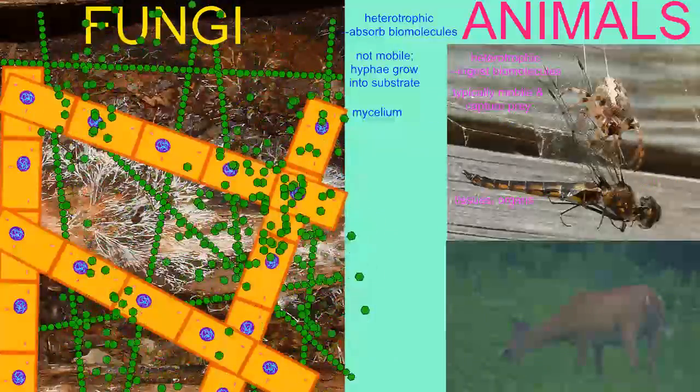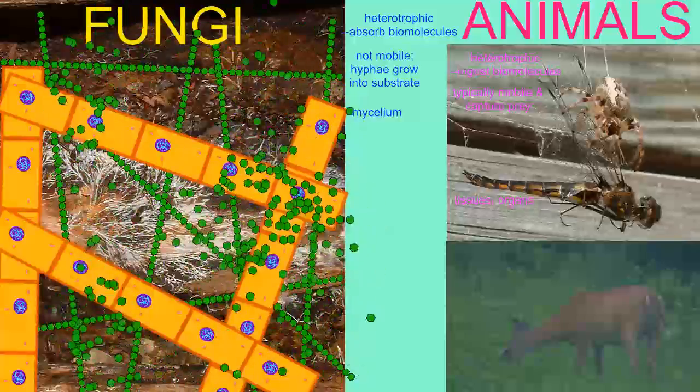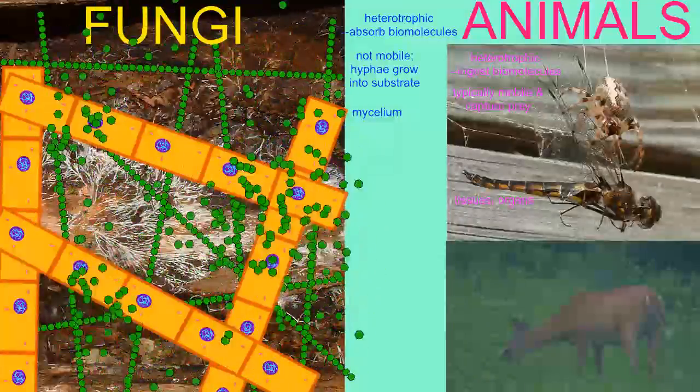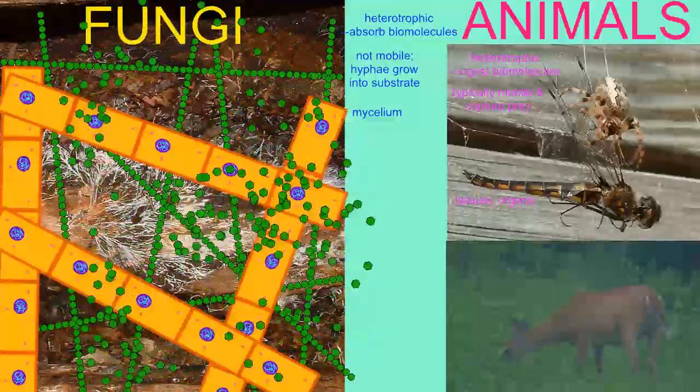While masses of animal cells will form tissues and organs, masses of fungal cells form simple mycelia, although more complex reproductive structures may form.